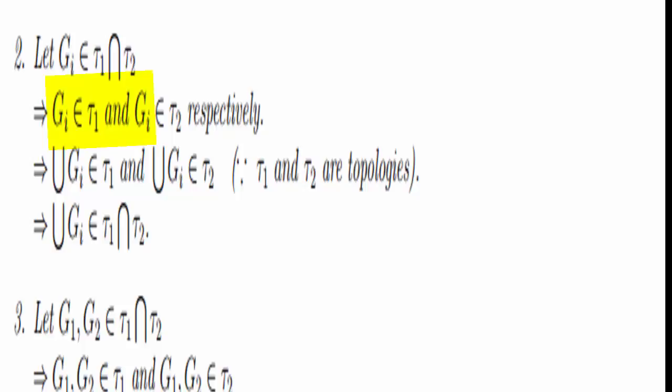These are open sets in τ₁ and in τ₂. The union of these open sets lies in τ₁ because they are open sets in the first topology τ₁, and the union of any number of open sets should also live inside τ₁. Similarly, these are open sets in τ₂, so the union of these open sets should also be inside τ₂ because it's a topology on X. This means the union is in the intersection — the union of the O_αs is in τ₁ ∩ τ₂. So that takes care of the second condition.